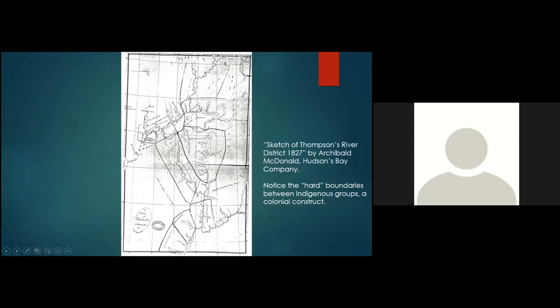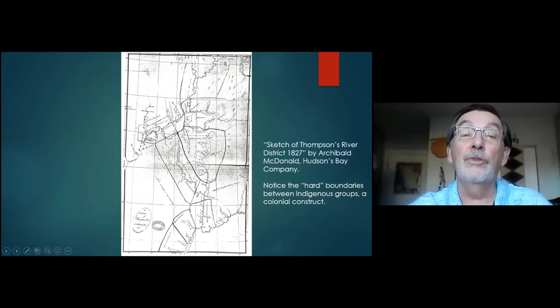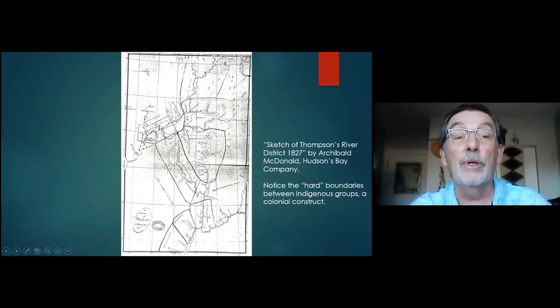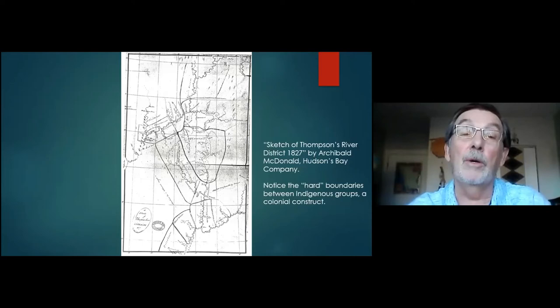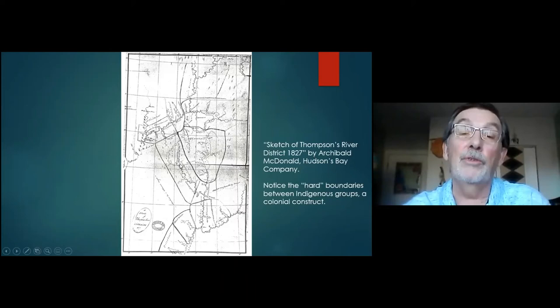This is the Sequemek or Shuswap area. This is the Okanagan, and then we have what was called by him the Kutamine or the Inalikapamuk, the Thompson people, and various other groups. This is an interesting map because it shows, using hard lines, the cultural areas, the boundaries between the cultural areas. We all know that hard lines rarely exist when it comes to human nature, so this is a map that reflects his knowledge of these people at the time.